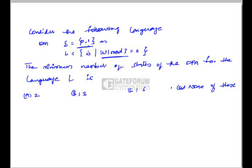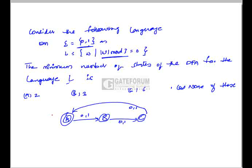The DFA accepting language L is given. This DFA accepts strings whose length is divisible by 3 over the alphabet, and it contains three states: A, B, and C. Hence the number of states in the required DFA is 3, so the correct option is option B.